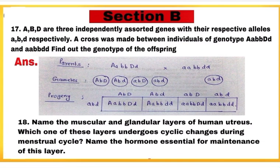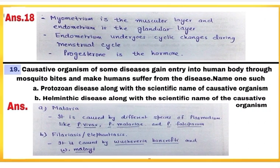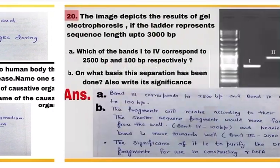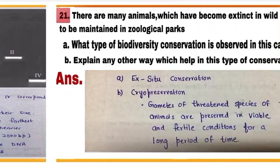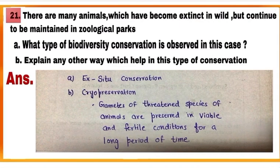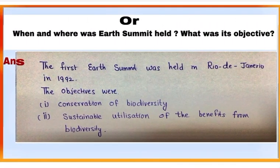Section B has 5 questions of 2 marks each — question numbers 17, 18, 19, 20, and 21. There is a choice in question number 21 and you have to attempt any one of these.